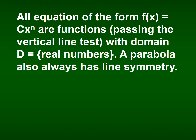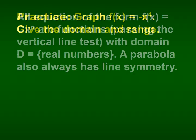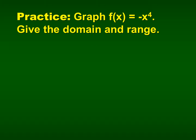A parabola will also have line symmetry on the y-axis. Let's graph f of x equals negative x to the 4th and give the domain and range. Notice the non-use of parentheses — this is actually saying negative 1 times x to the 4th, meaning you do x to the 4th first and then multiply by negative 1.